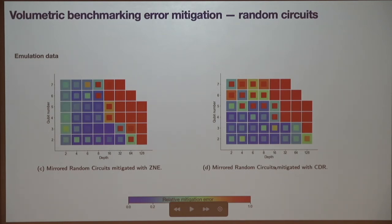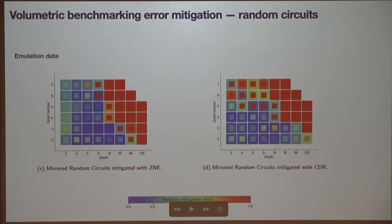At some point you hit a depth barrier beyond which error mitigation fails. What you're looking at here: for various qubit numbers and depths, each outer square represents a median value of the relative mitigation error and the inner square represents the worst case. If that relative error is one or larger, mitigation has failed — it did not produce a better expectation value than the noisy one.